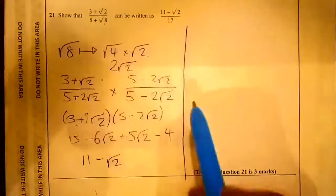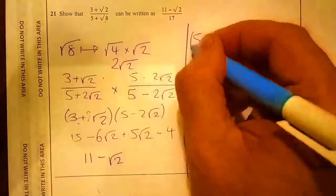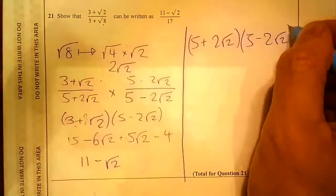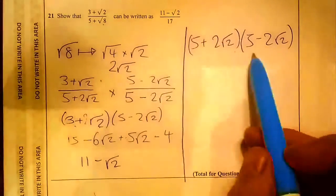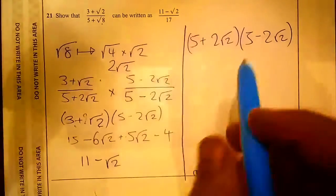Looking at the denominator, we have (5 + 2√2)(5 - 2√2). Because this is a difference of two squares, if we expand it, the two middle terms will cancel out.